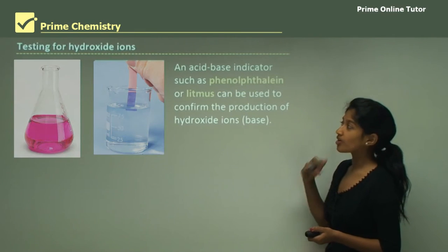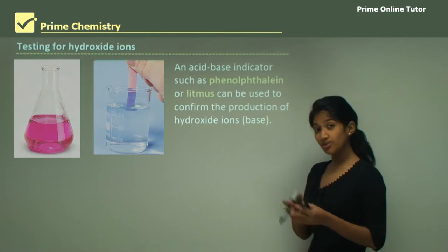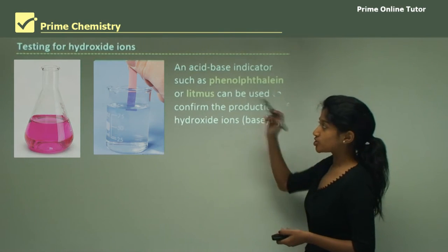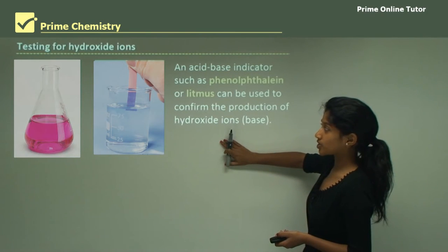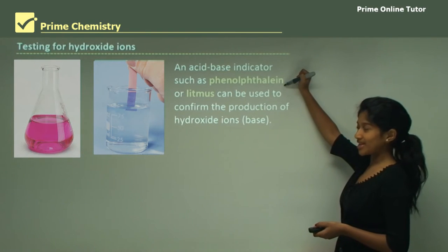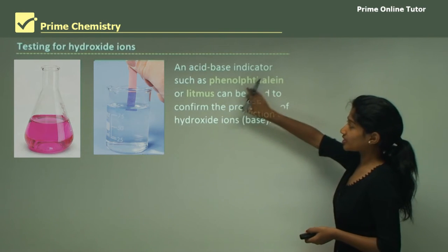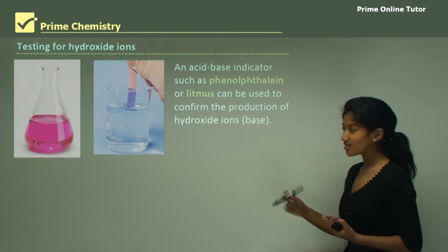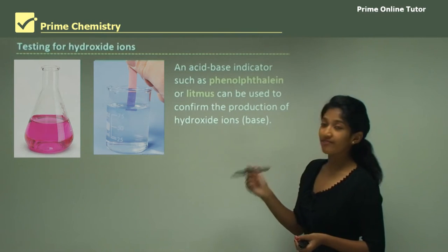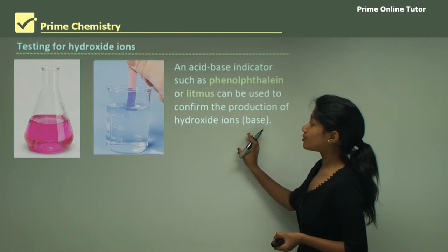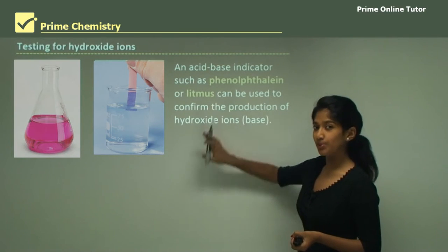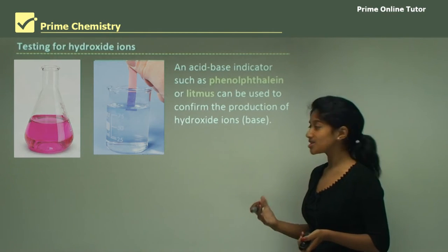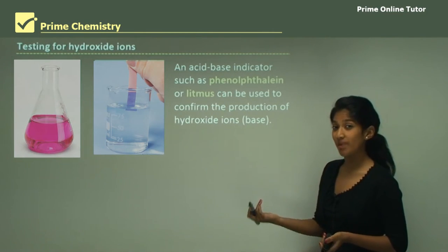To test for hydroxide ions, since the metal reacting with water also produces a metal hydroxide, we use an acid-base indicator. Phenolphthalein or litmus is mainly used. Phenolphthalein would turn pink if hydroxide ions are present, and red litmus would turn blue if hydroxide ions are present, because hydroxide ions are a base.